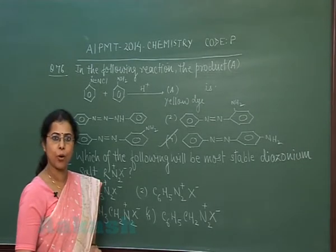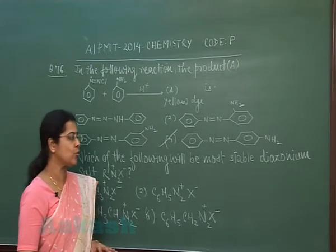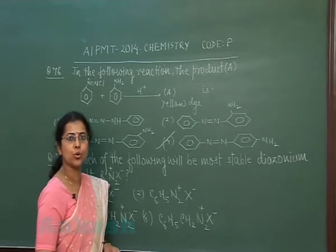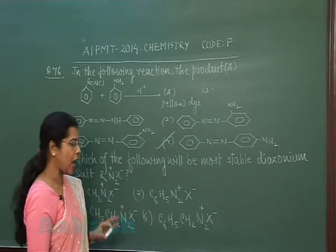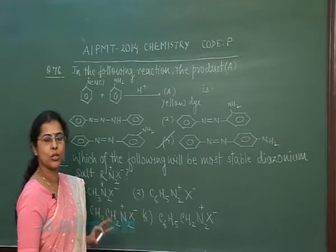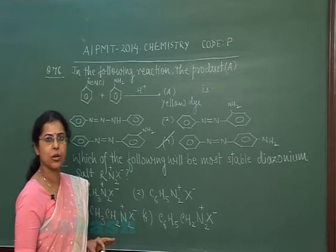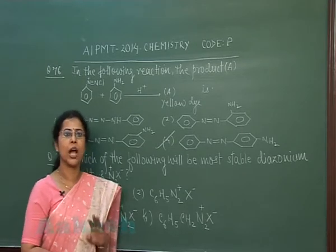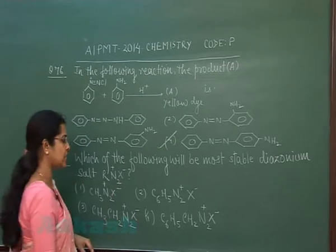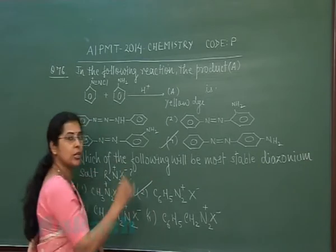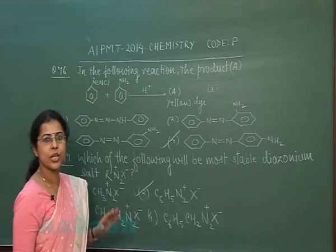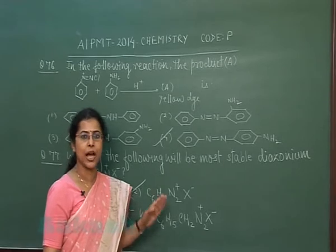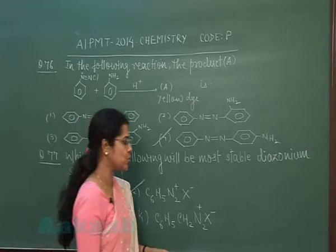Diazonium salts are stable only in the case of aromatic compounds, in which resonance plays an important role. Aromatic diazonium salts are stable while aliphatic diazonium salts are highly unstable. So the correct option is the second option: phenyl (benzene) diazonium salt.